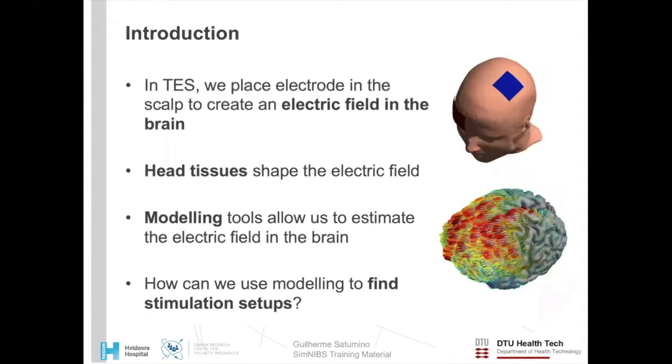Now for some background. In transcranial electric stimulation, we place electrodes in the scalp to create an electric field in the brain. However, the head tissue, such as the skull, influence how the electric field spreads. This influence is often not intuitive and depends on subject-specific anatomy. This is where modeling tools such as SimNIBS come in, as they allow for estimating the electric field in the brain in a subject-specific fashion. What we want to do is take this one step further and use the modeling tools to automatically find the stimulation setup which are individualized and tailored towards specific objectives, such as stimulating a target region as focally as possible, especially in multi-channel TES.